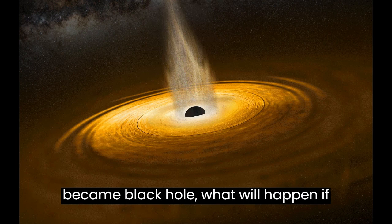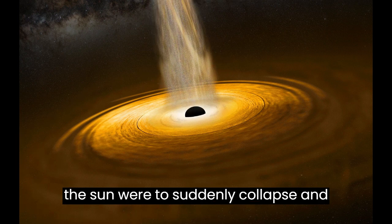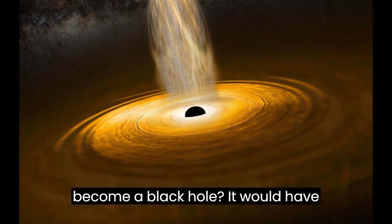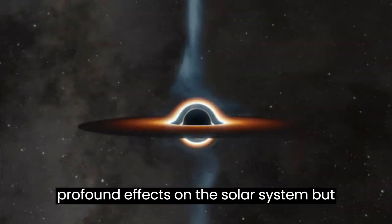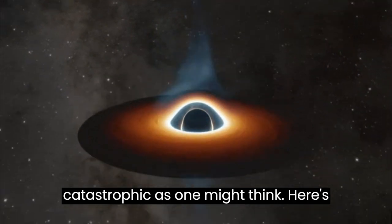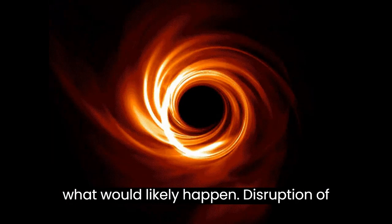If the Sun became a black hole, what will happen? If the Sun were to suddenly collapse and become a black hole, it would have profound effects on the solar system, but those effects might not be as catastrophic as one might think. Here's what would likely happen.